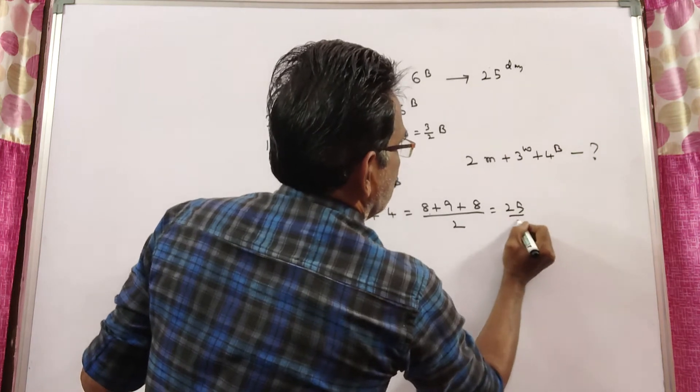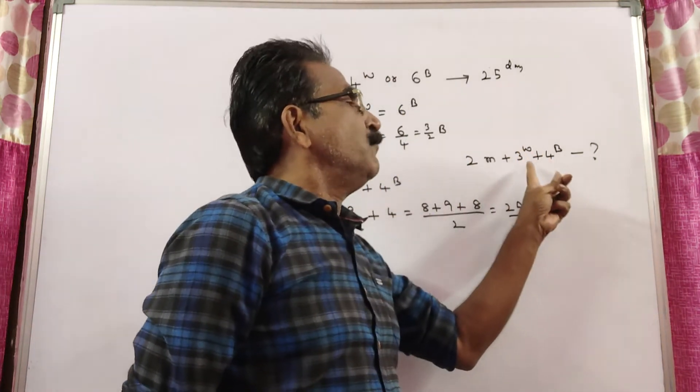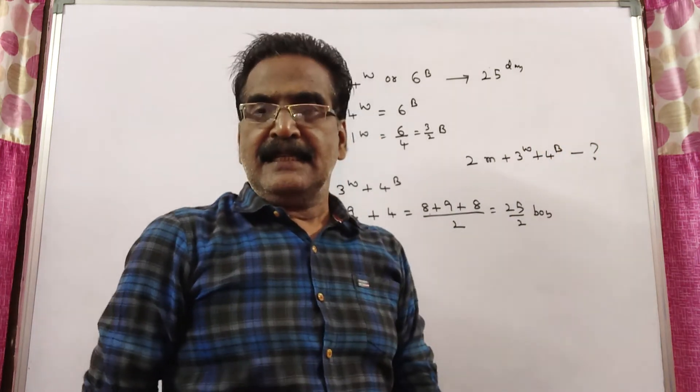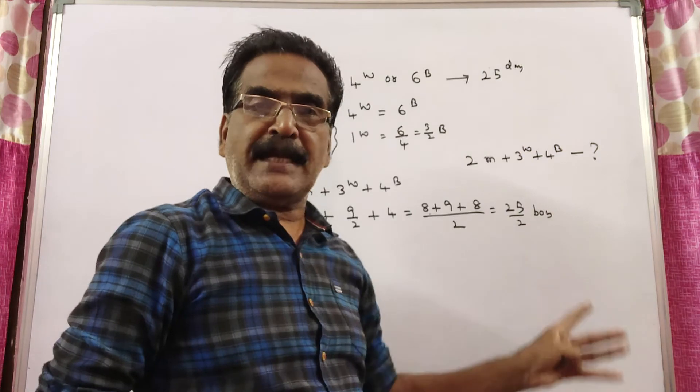25 by 2 boys. So, 2 men, 3 women and 4 boys. This team is equal to 25 by 2 boys.